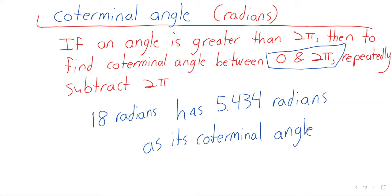There's no really good way to write this. You just have to write this sentence. 18 radians has 5.434 radians as its coterminal angle. In particular, I mean that might seem like a kind of awkward way of writing. But we don't want to say that an angle is equal to its coterminal angle. 18 radians and 5.434 radians aren't equal. They just have the same initial and terminal sides.